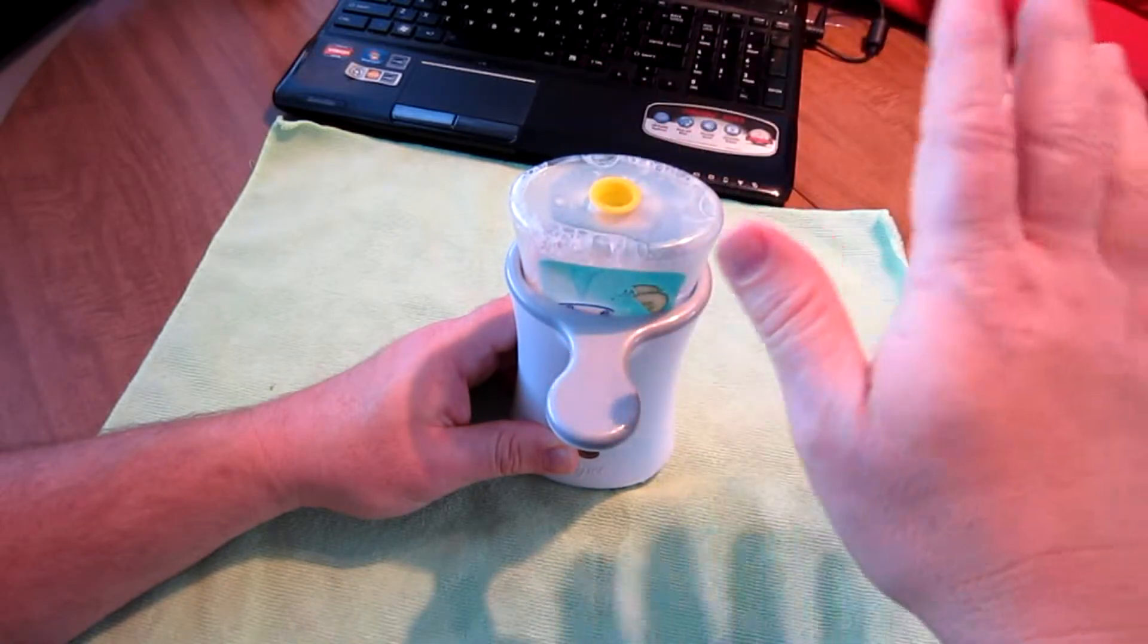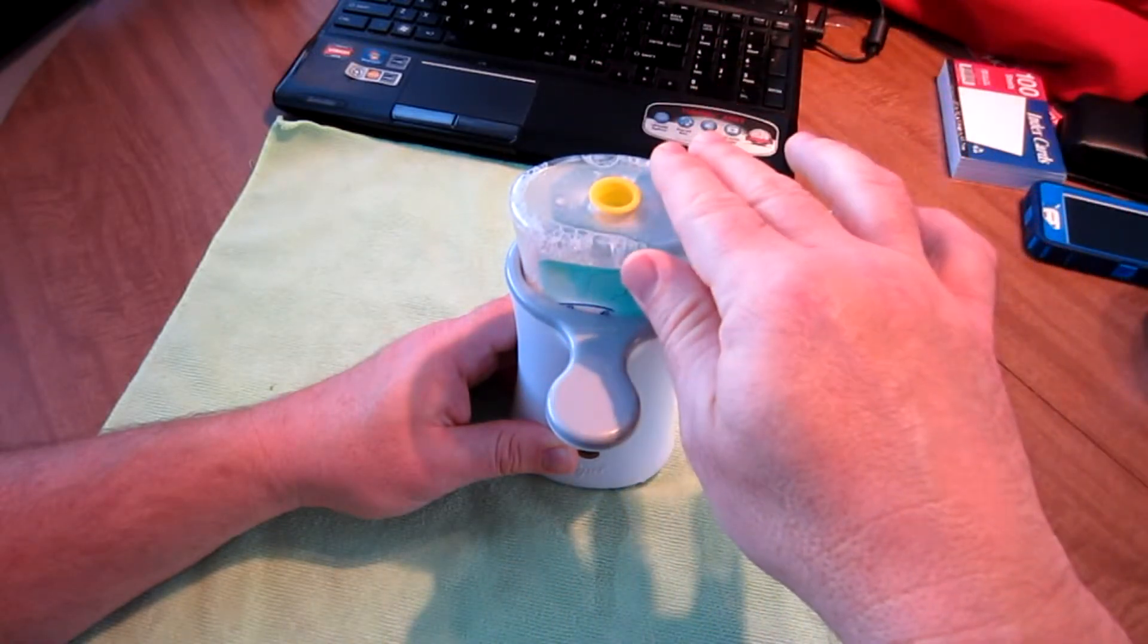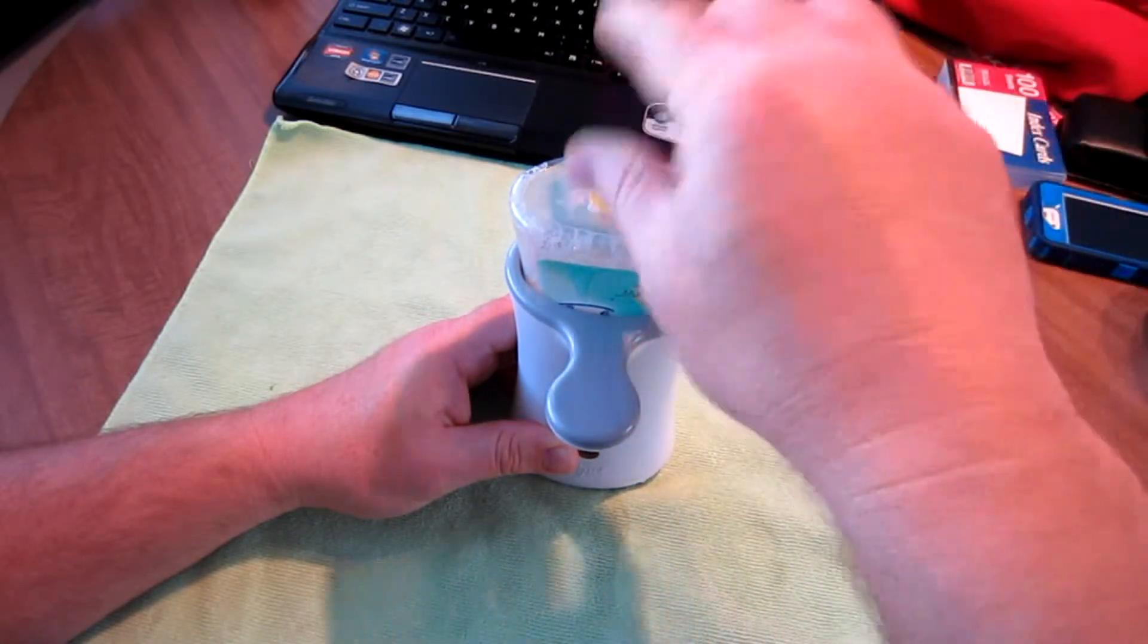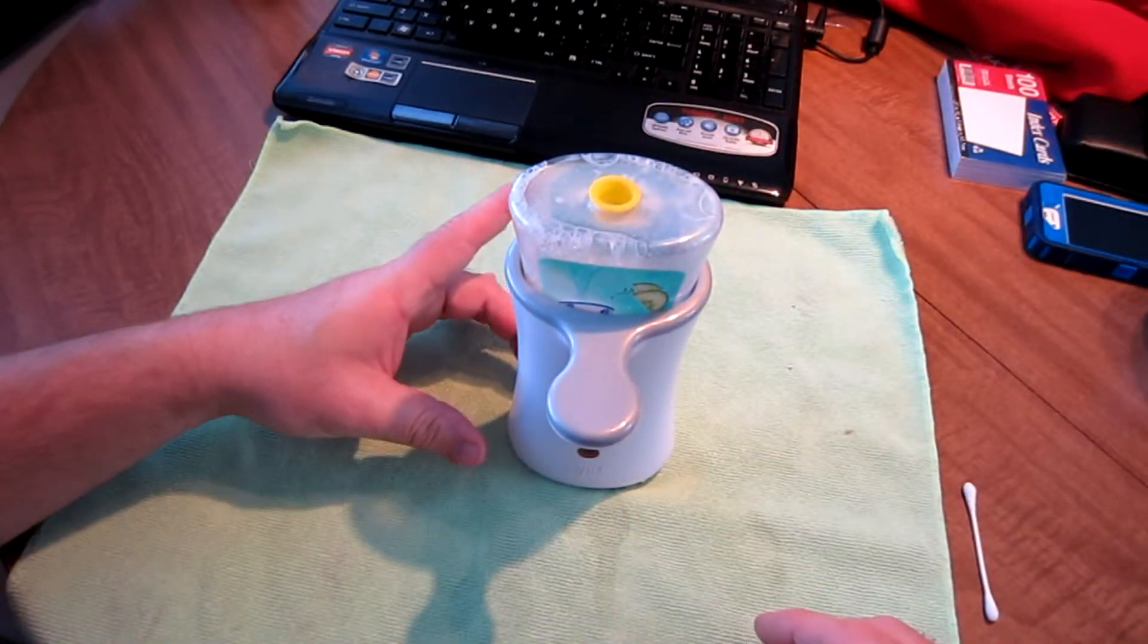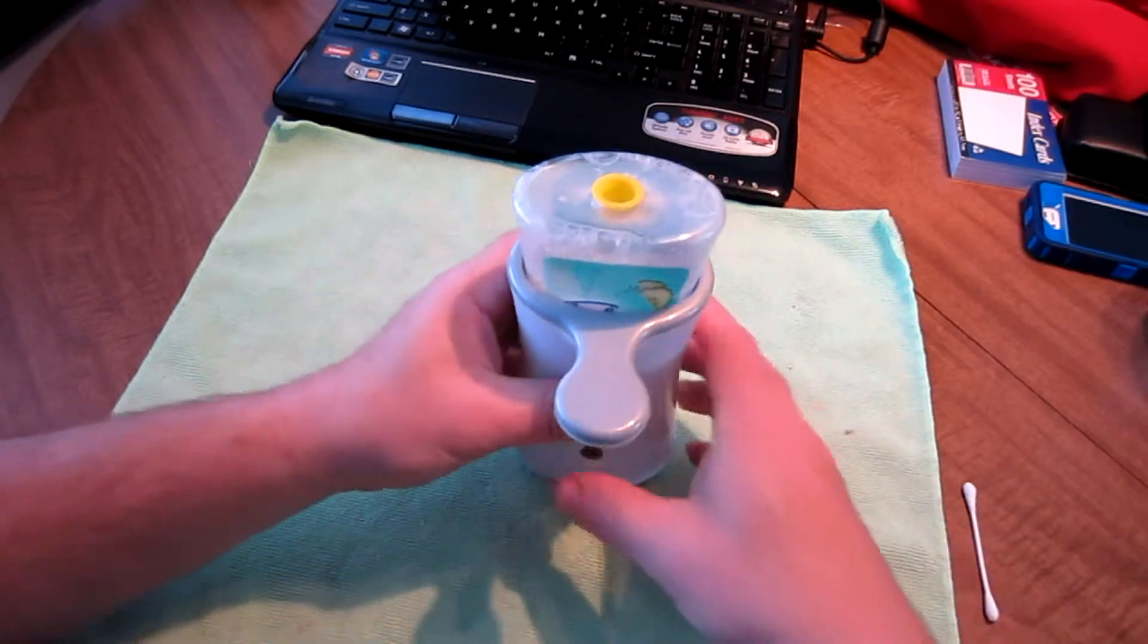And you can then go buy whatever refill you want, whatever kind of soap refill you want. And just at that point, as it's sitting in the bathroom, turn the unit off so it doesn't dispense soap as you move your hands around it.